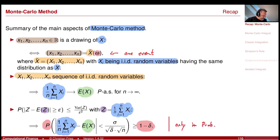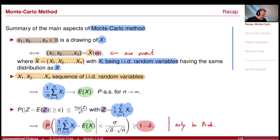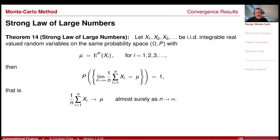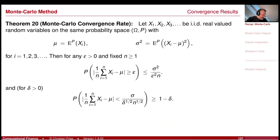This first part — the modeling of the drawing — was related to modeling the drawing by building the product space. The second part — the convergence results — was the strong law of large numbers, giving us convergence. And the last one was our Monte Carlo convergence rate derived from Chebyshev's inequality.